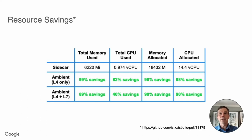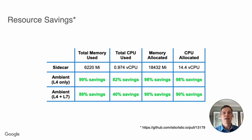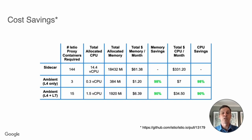Across a cluster, Ambient Mesh uses less memory and CPU than sidecars. It is also no longer necessary to make complicated resource reservation calculations, which makes Istio easier to deploy, and it frees up node-level resources, since each pod doesn't need to allocate a proxy to handle its potential peak usage. This translates directly into cost savings of 90% or more. Keep in mind, this slide shows a small three-node deployment, so the dollar amount will be quite substantial at a larger scale.